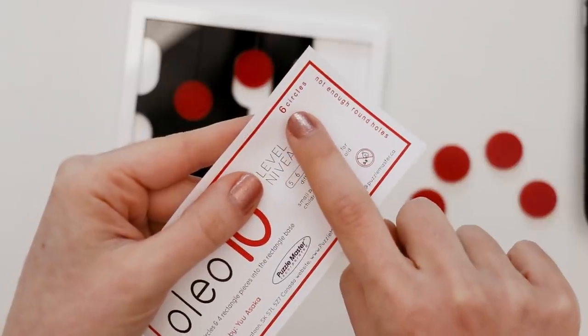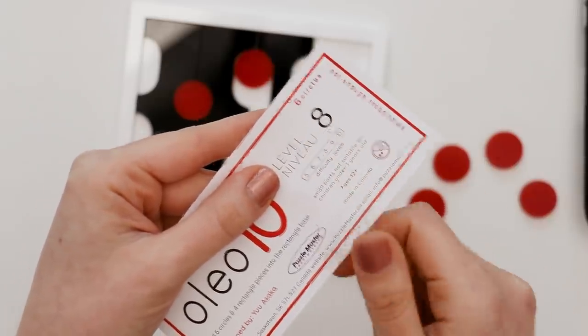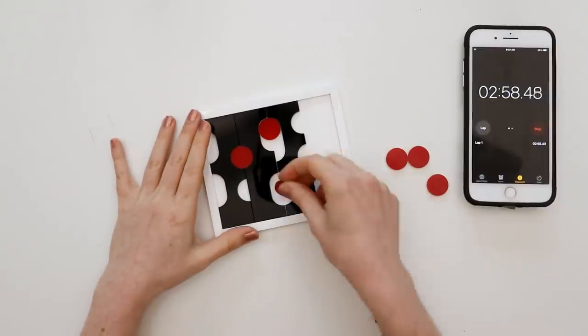The one clue that they give you is 6 circles, not enough round holes. So that's not much of a clue. Thanks for that help, Yu Asaka. But alright, let me get back to it.